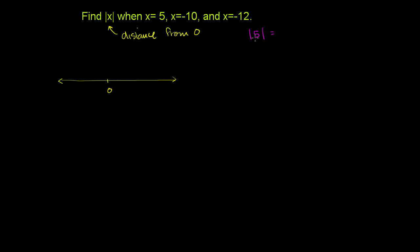The absolute value of 5 is the distance of 5 from 0. So you go 1, 2, 3, 4, 5. 5 is exactly 5 to the right of 0. So the absolute value of 5 is just 5.